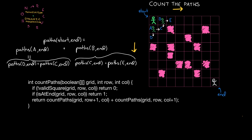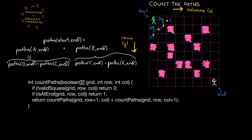Translating this into code is relatively straightforward. We just traverse down and to the right, obviously making sure we're not out of bounds or in a blocked off square. We sum up the number of ways of going down plus the number of ways of going to the right, and when we get to the actual end we return one. The valid square function does both the boundary checking and making sure we're not in a blocked off square — if we are, we return zero. One tip: whenever I do a matrix problem, I like to use row and column for my variable names rather than x and y, because x translates to columns and y translates to rows, but people instinctively write grid[x][y] which is backwards. Use rows and columns instead.